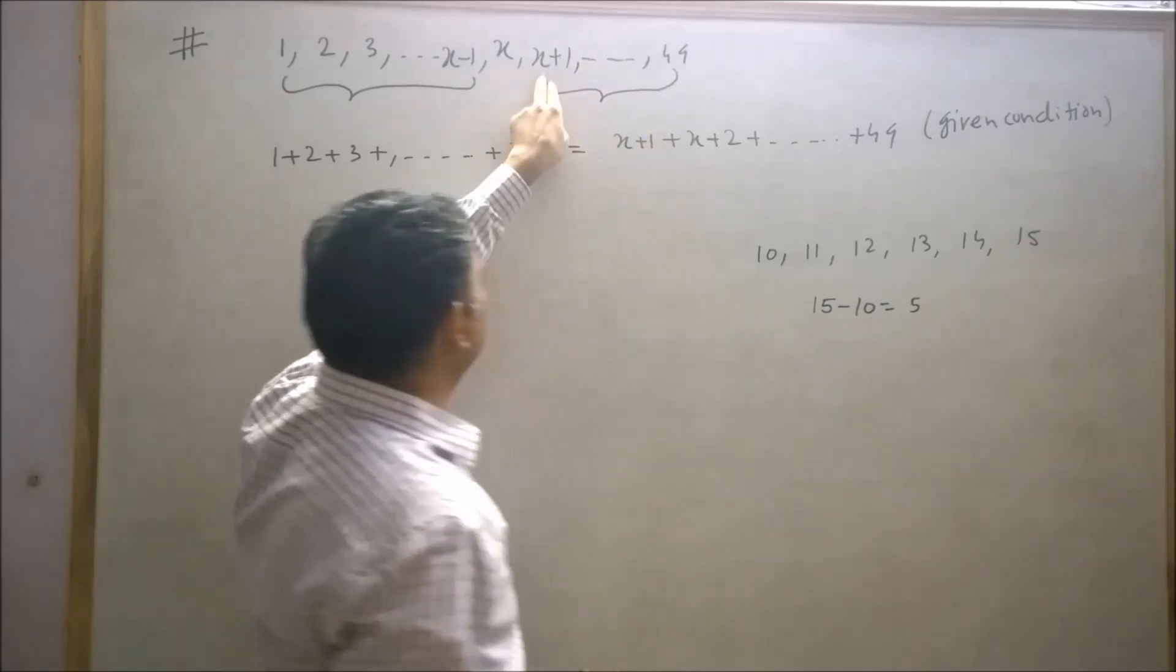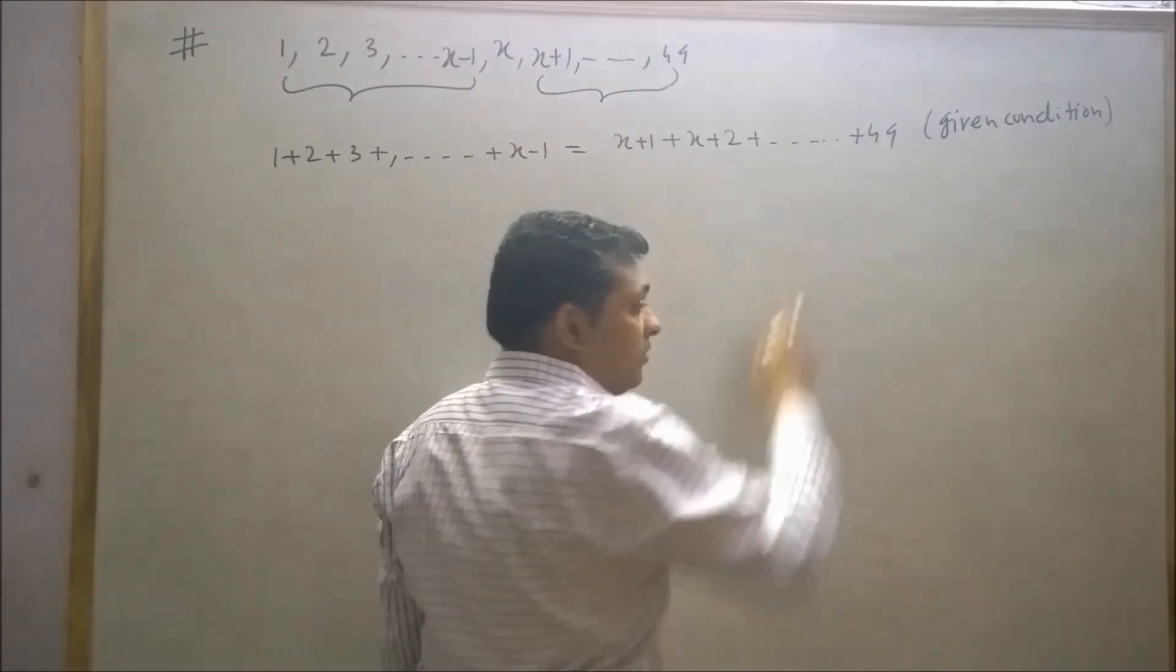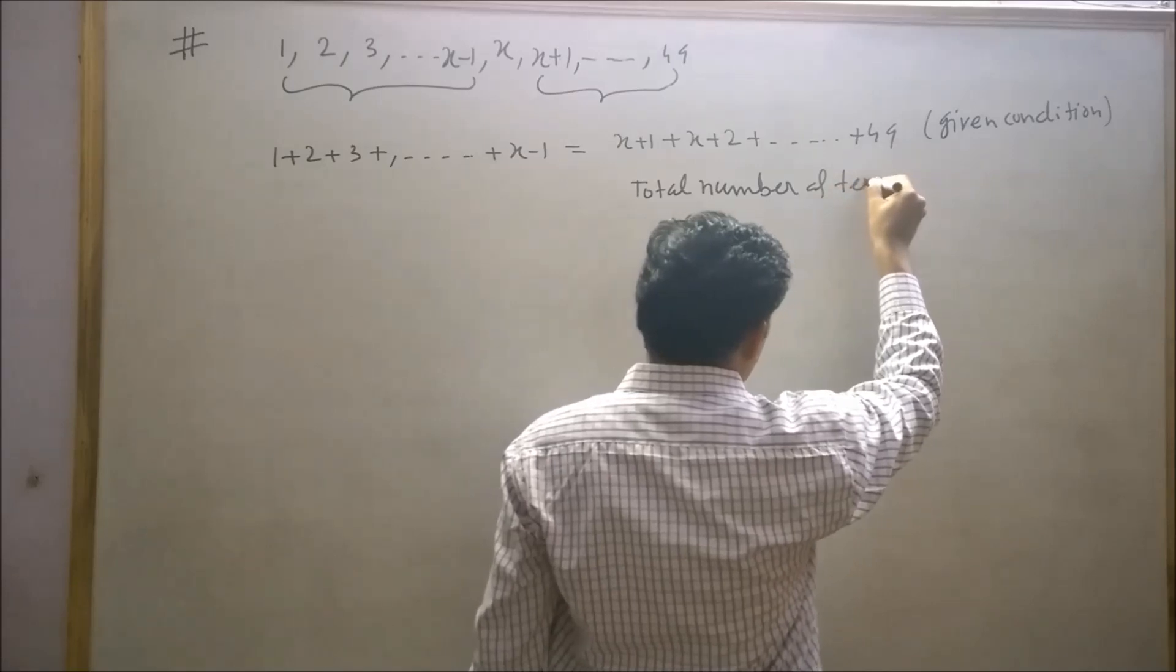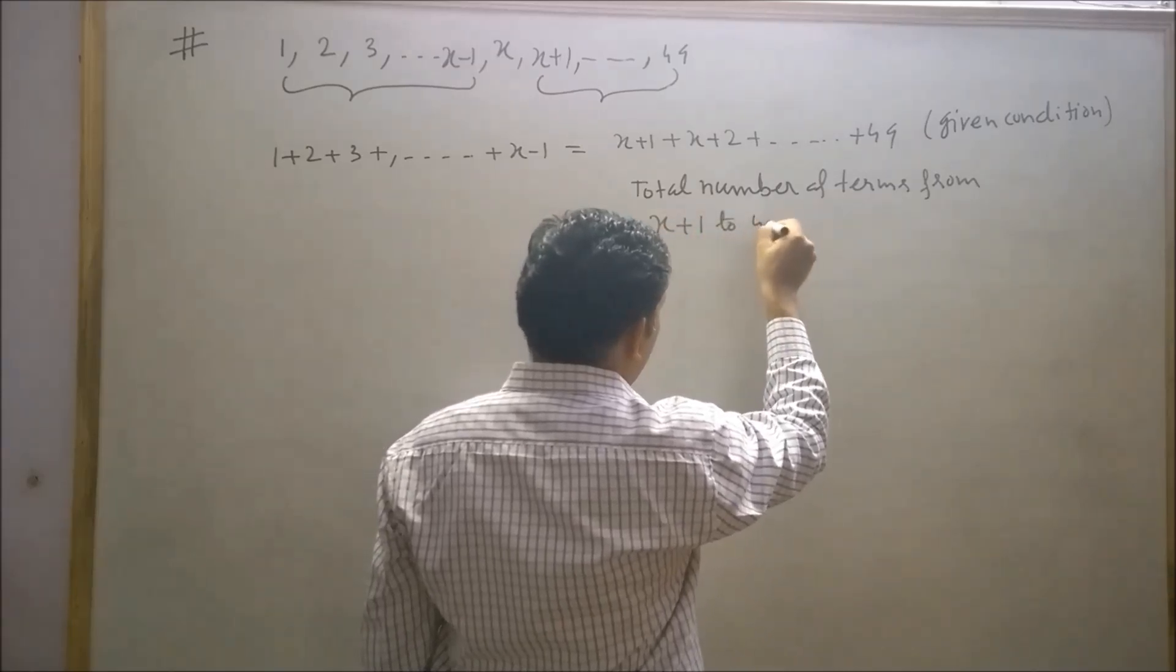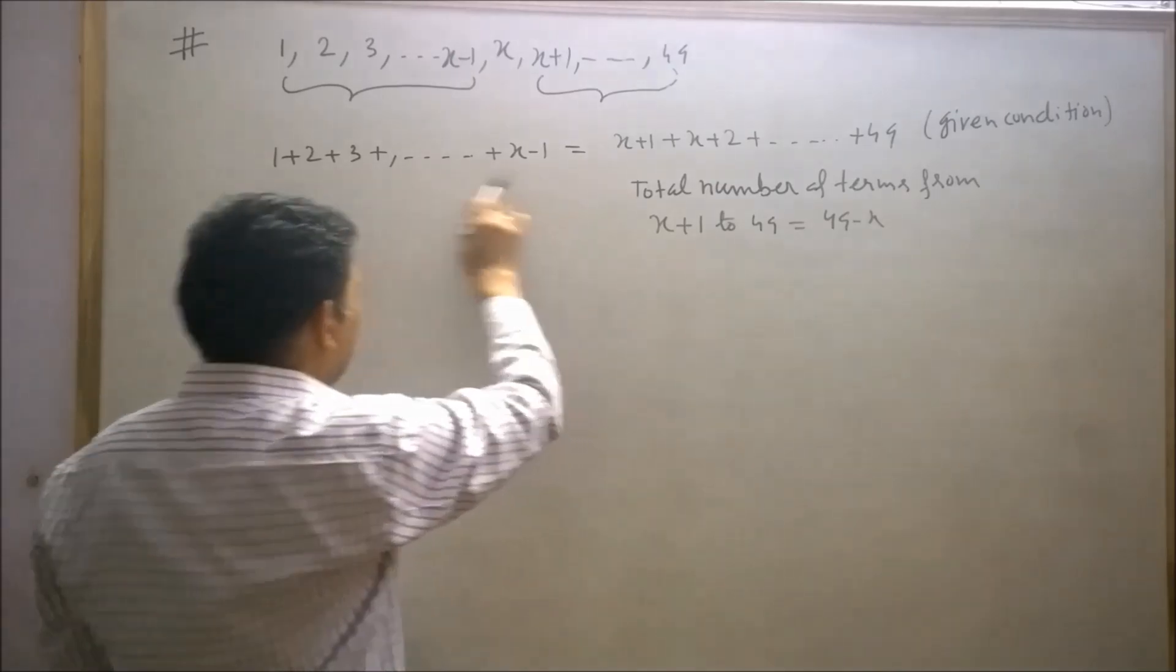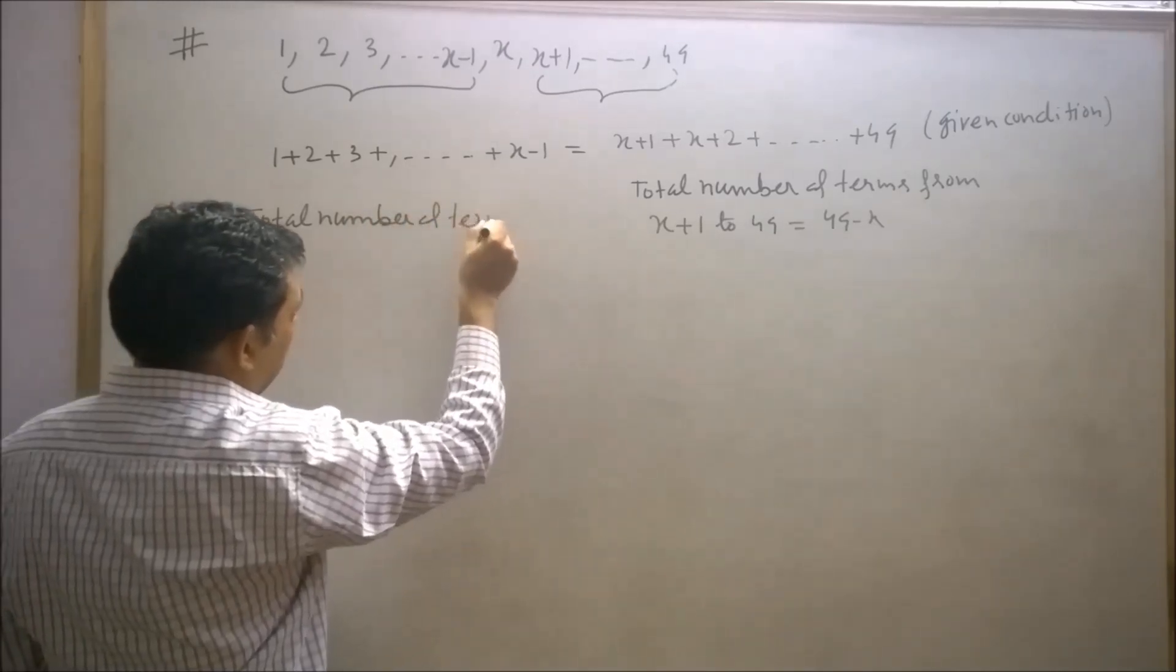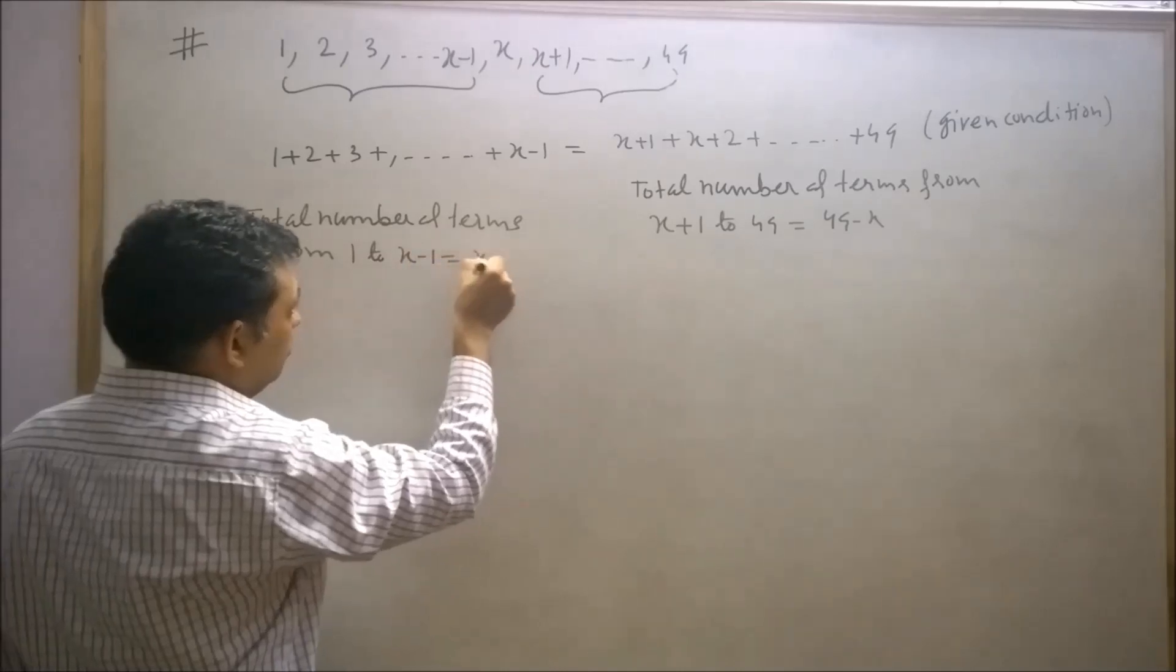Similarly, if I ask you how many terms are there from x+1 to 49, your answer will be 49-x. So the total number of terms from x+1 to 49 is equal to 49-x, and the total number of terms from 1 to x-1 is equal to x-1.